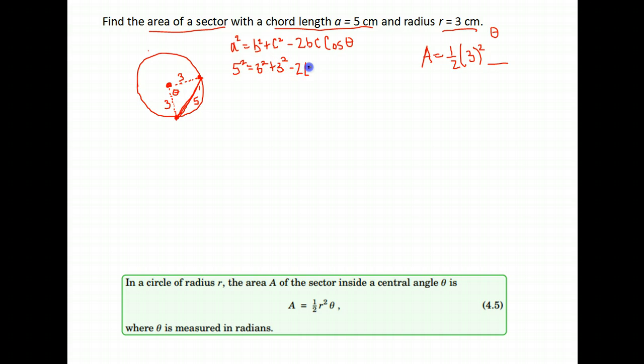minus 2 times 3, times 3, times the cosine of, again, theta, which I don't know. And we would solve from there.